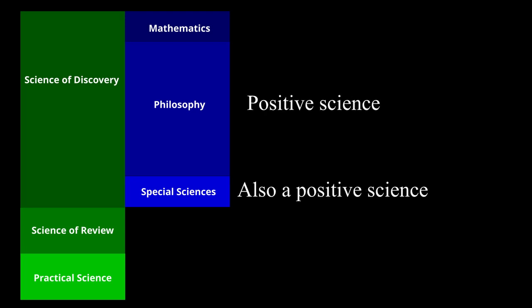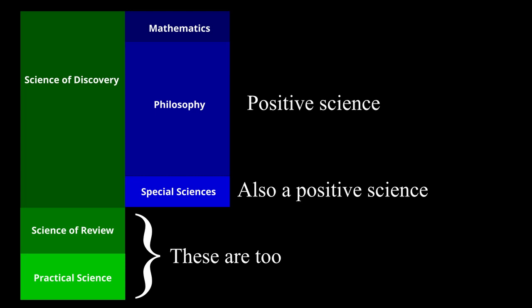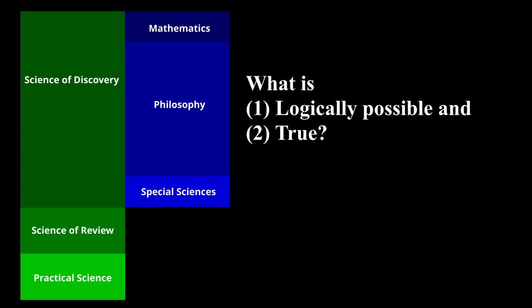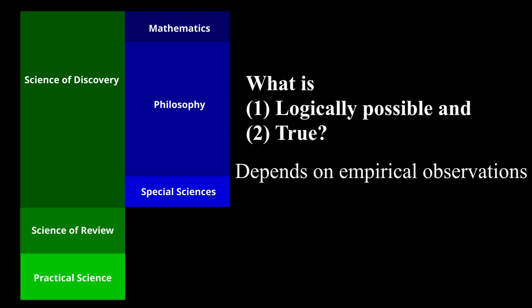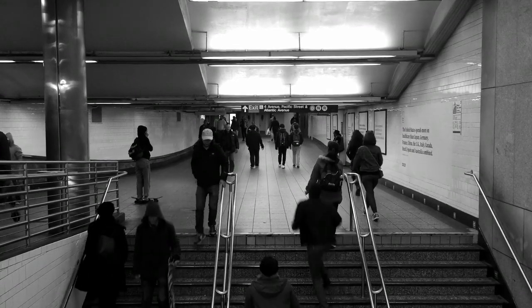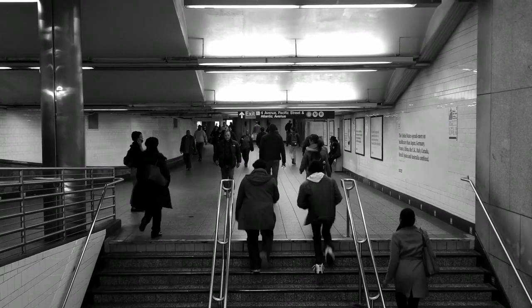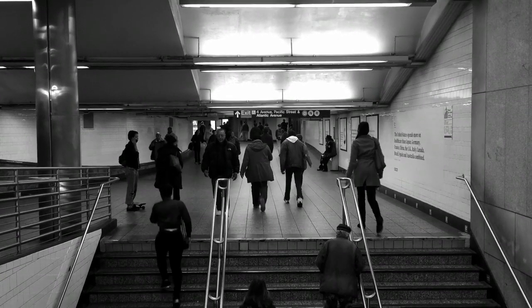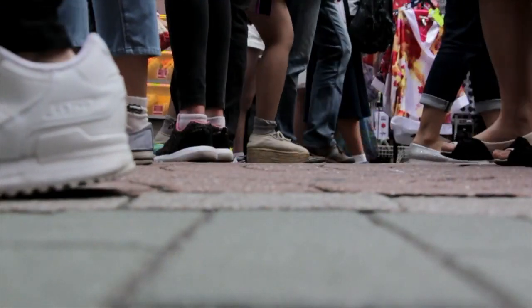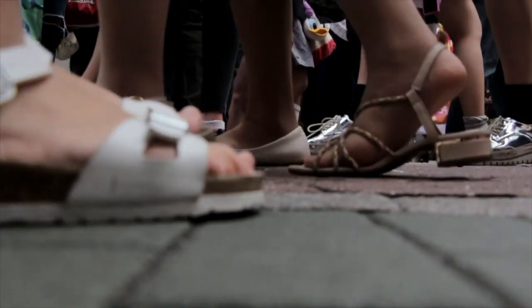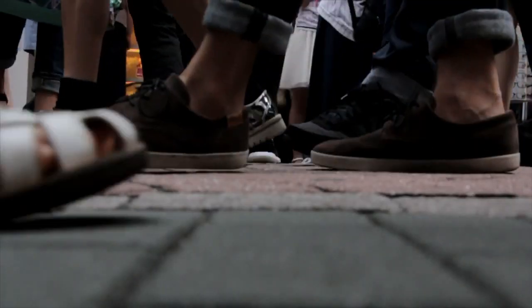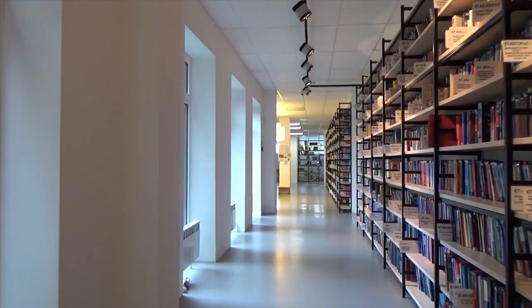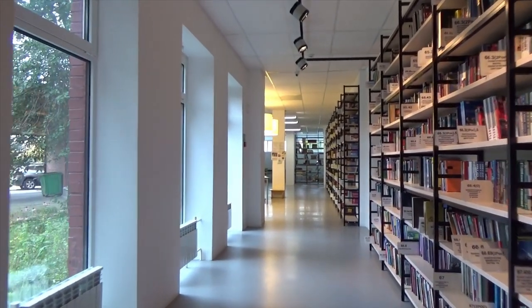In contrast to mathematics, philosophy is a positive science, which means that it observes the reality around us. It is interested not only in what is logically possible, but also in what is true. Therefore philosophy depends on empirical observations. Philosophical observations do not need any particular skill or instruments — they are open to everyone because they are based on our universally recognized common experience.